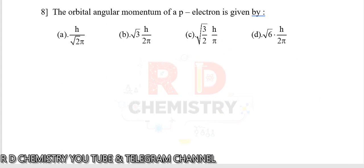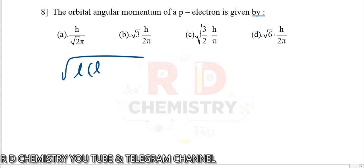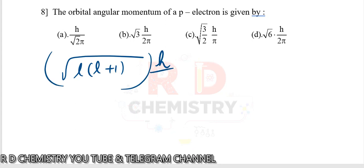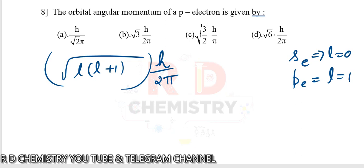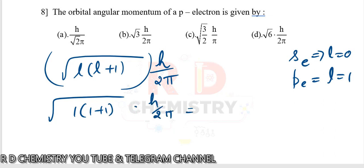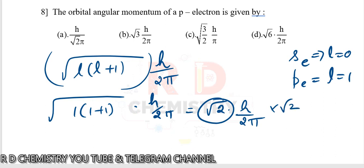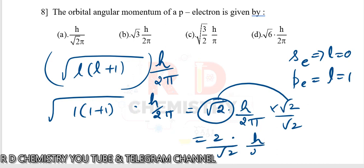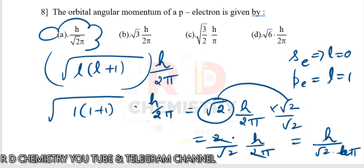Question number 8. The orbital angular momentum of a p-electron is given by √(L(L+1)) × h/2π. For a p-electron, L=1. So it is √(1×2) × h/2π = √2 × h/2π. Multiplying numerator and denominator by √2: this becomes 2/(√2) × h/2π = h/(√2 × π). Simplifying, 2 and 2 cancel to give h/(√2 · π). The answer is option A.